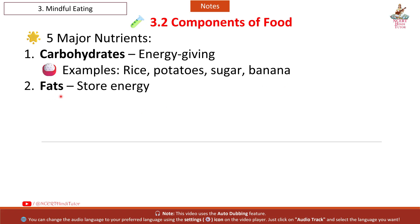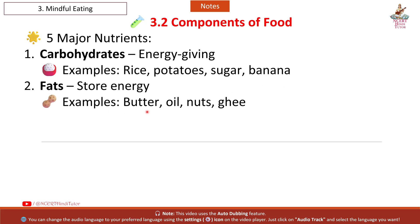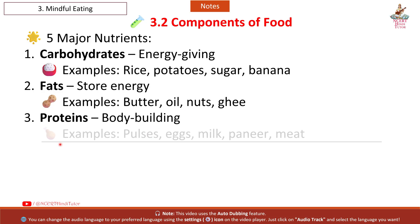Second: Fats – store energy. Examples: butter, oil, nuts, ghee. Third: Proteins – body building. Examples: pulses, eggs, milk, paneer, meat.